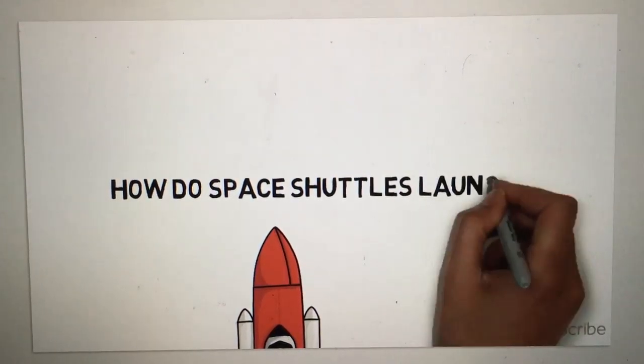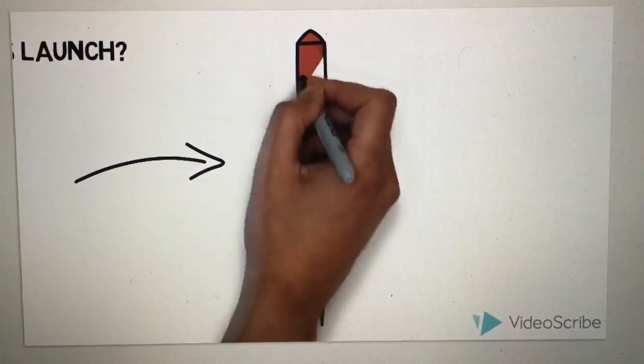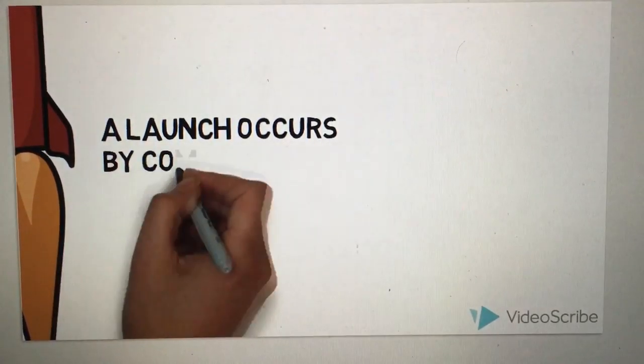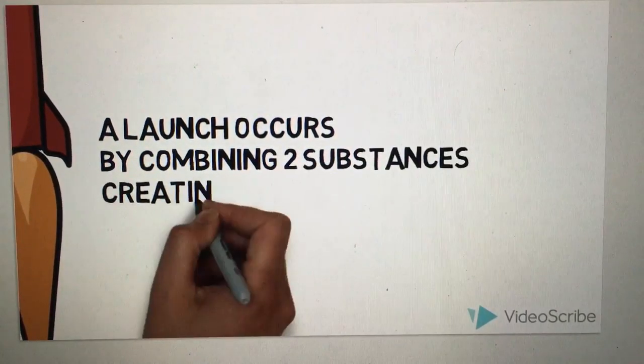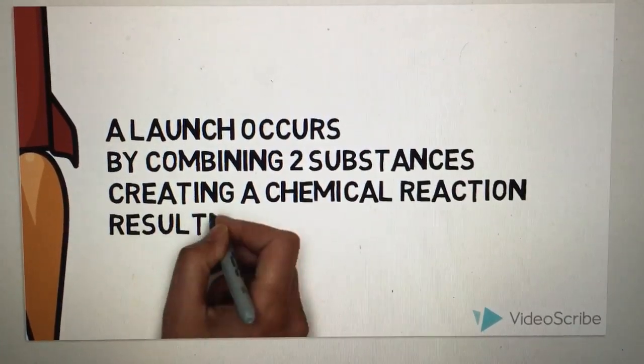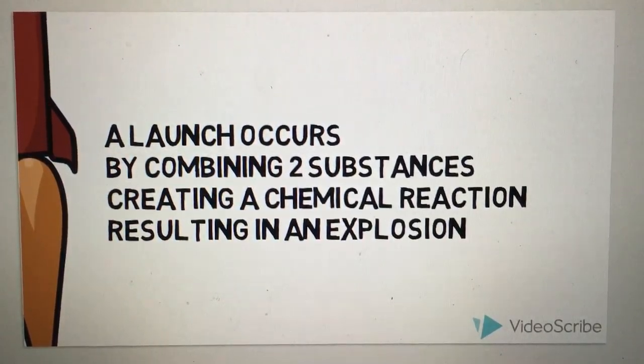How do space shuttles launch? A launch occurs by combining two substances, creating a chemical reaction, resulting in an explosion.